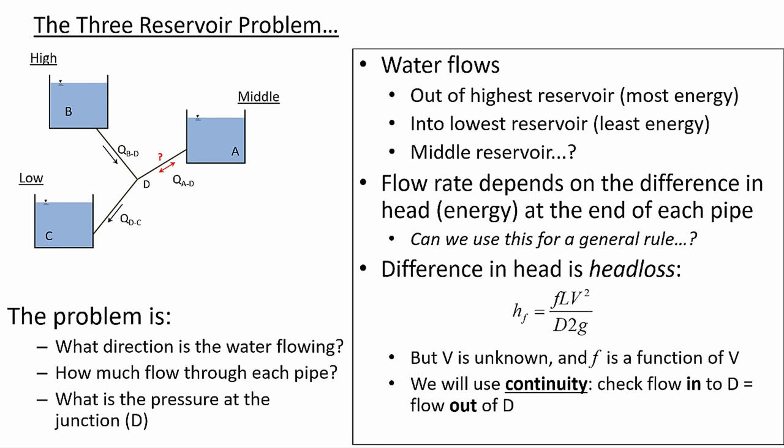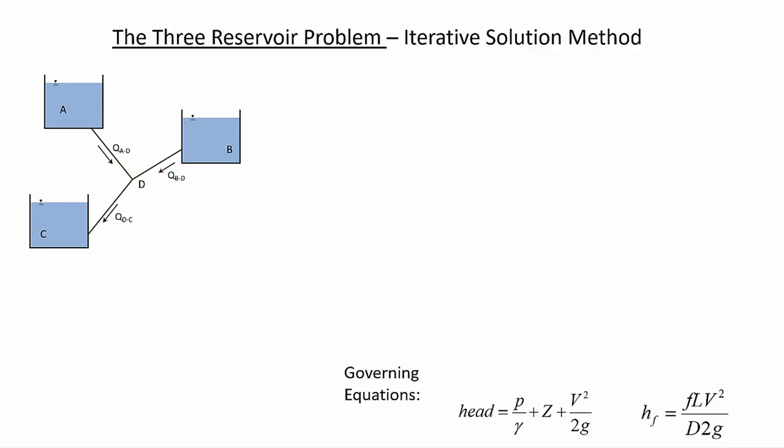So everybody should understand what the problem is, why it's a problem, what the tricks are — how we start with a guess of the F value. We check convergence: has the F value stabilized? Does flow in equal flow out? If both are thumbs up, then we may have a correct solution. This is an iterative process.